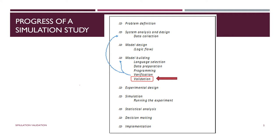We need to decide what we want to do with this model — which we should have thought about a bit before building it. And then finally, simulation is where we're actually running the model and conducting the statistical experiment. Once we've done that and generated all the experimental data using simulation, we move to statistical analysis, decision making, and implementing any decisions that come out of the project.